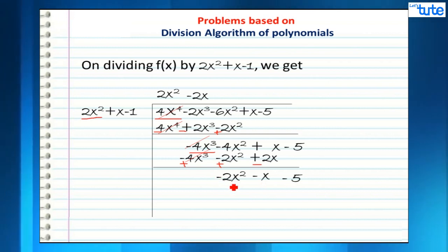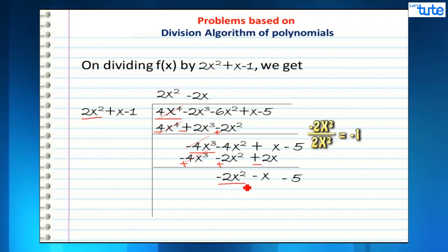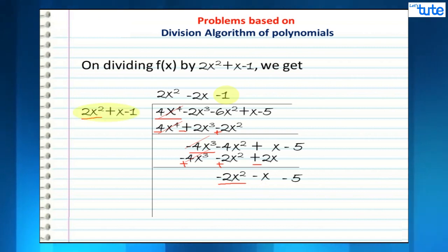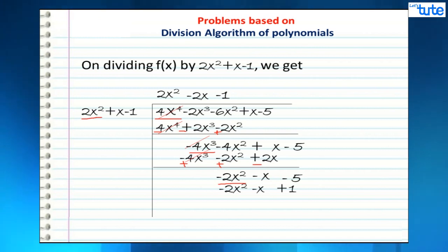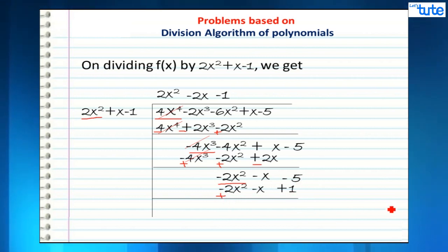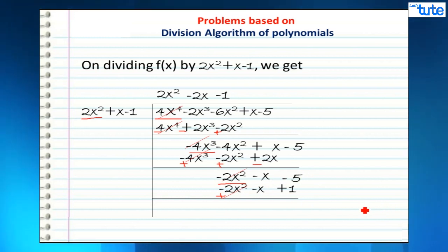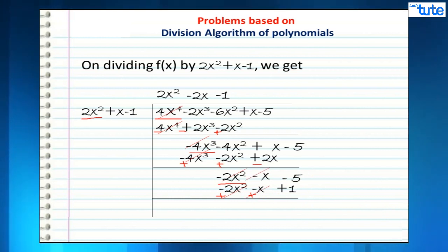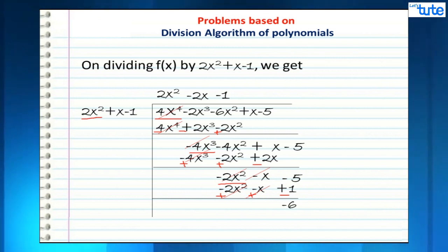The first term is -2x². Dividing by 2x², we get -1, the third term of the quotient. Multiplying -1 by 2x² + x - 1 gives -2x² - x + 1. Subtracting: -2x² + 2x² = 0, -x + x = 0, and +1 becomes -1, so -5 - 1 = -6. The remainder is -6.